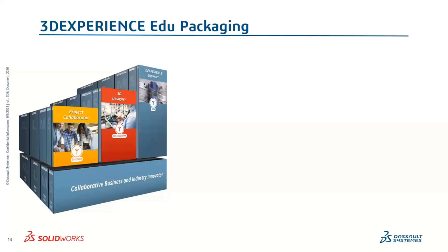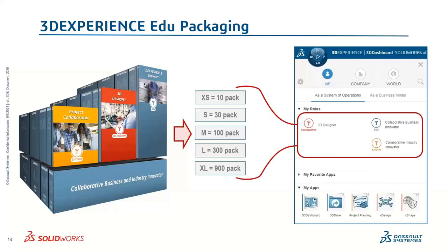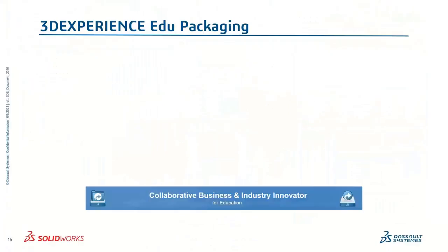For the 3DEXPERIENCE EDU portfolio, we have a few main packs you can purchase in pack sizes of 10, 30, 100, 300, and 900. Those roles appear in your compass, which helps you navigate the platform — just like navigating waters on the ocean. You can combine pack sizes to reach your desired number of students. One key difference from SOLIDWORKS floating licenses: these are named users, not floating. If you've got 30 students in class, the 30-pack is perfect — each student gets their own named user account.